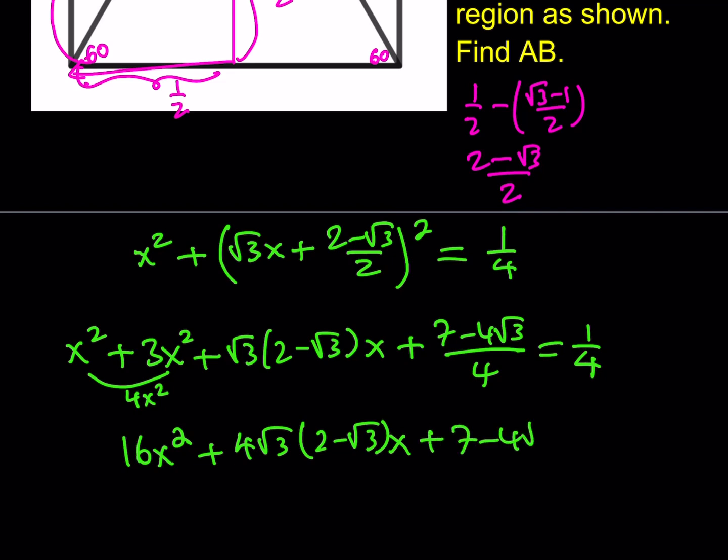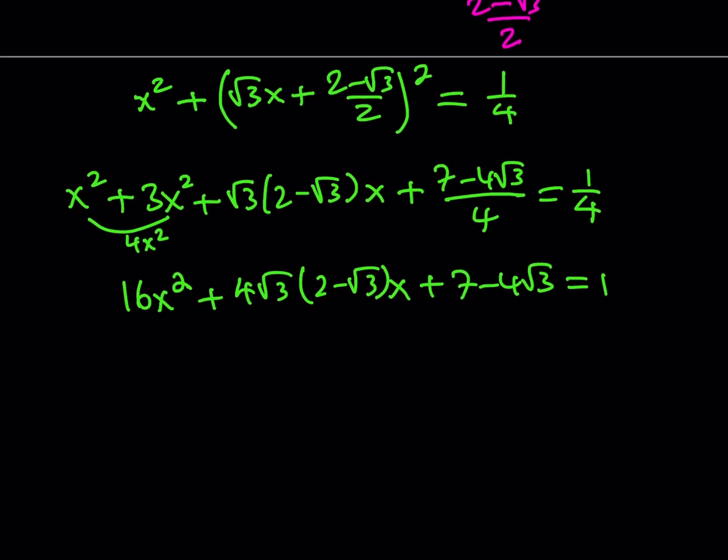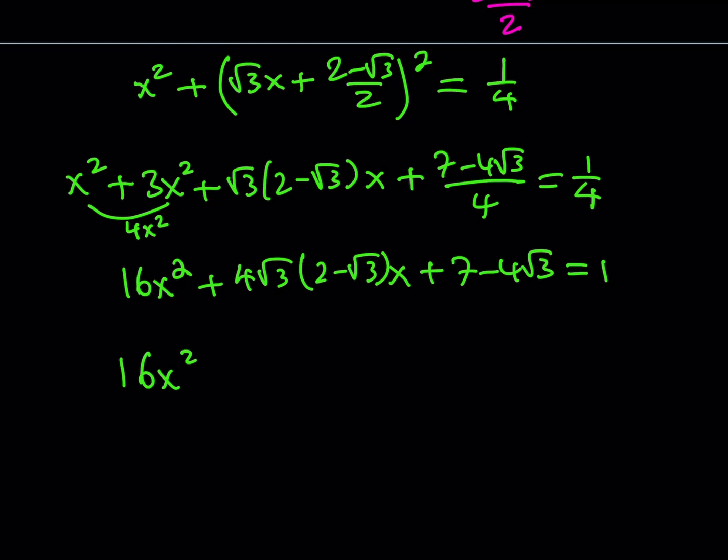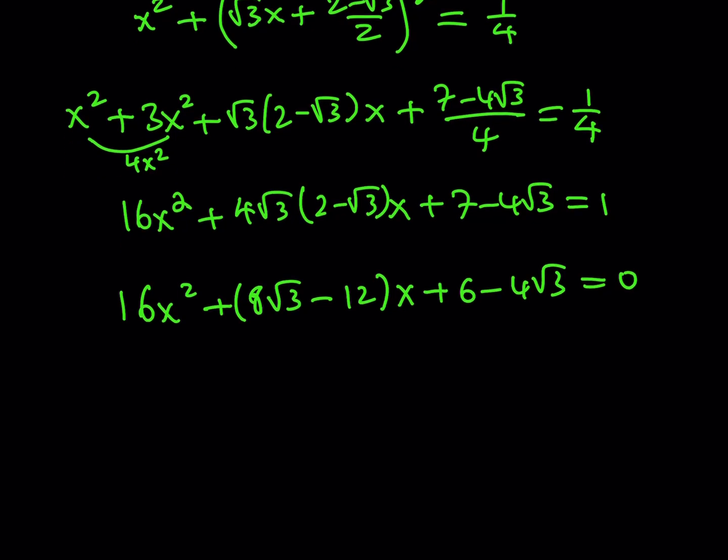Plus, 7 minus 4 root 3 is equal to 1. So, we can go ahead and subtract the 1 and get a complete quadratic. 16x squared. 8 root 3, okay, I'll distribute it. 4 times 3 is 12x, and then minus 1 is going to give us 6 here, minus 4 root 3. Okay, obviously, from here, we can find the x value, and then double it to find the AB. So, how do you find the x value? There's going to be two solutions. Let's go ahead and see what they look like.